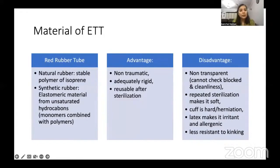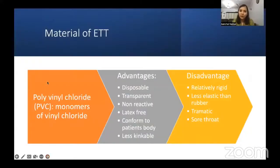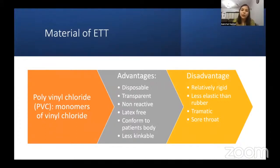Red rubber tubes were the initial ones used — made of natural rubber (a stable polymer of isoprene) or synthetic rubber (elastomeric material from unsaturated hydrocarbon monomers). Advantages: non-traumatic, adequately rigid, reusable after sterilization. Disadvantages: not transparent (so lumen obstruction cannot be confirmed), contained latex, cleaning was difficult, cuff was hard and lost shape on repeated sterilization, cuff herniation occurred, and they were less resistant to kinking. PVC tubes — monomers of vinyl chloride — are disposable, transparent, non-reactive, latex-free, and conform to the patient's body with fewer kinking issues.